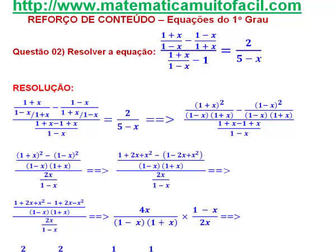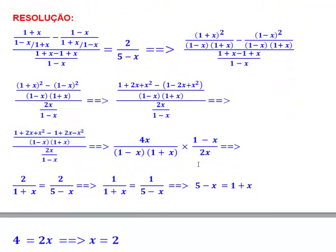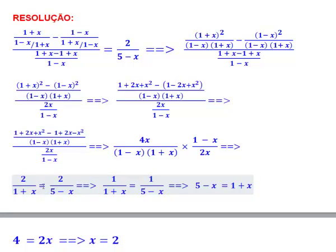A partir daí, o que eu vou ter? Simplifiquei aqui. O que eu tenho então? 2. Por que 2? Porque eu simplifiquei 4x com 2x, deu 2 sobre 1 mais x, já feita a simplificação. Isso é igual a quanto? Agora sim — agora eu voltei com o meu segundo membro: 2 sobre 5 menos x.